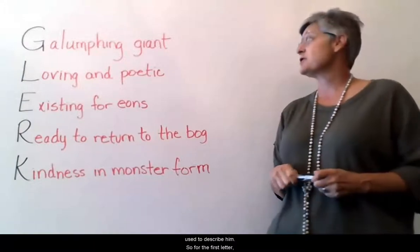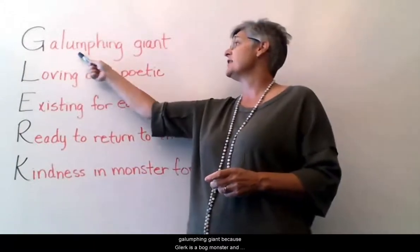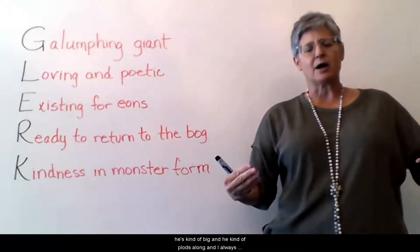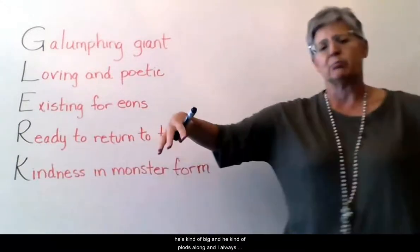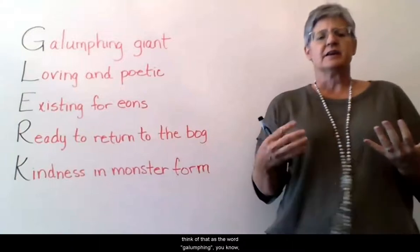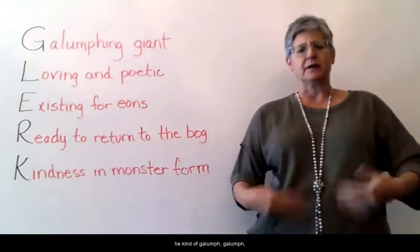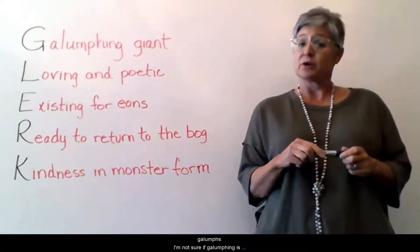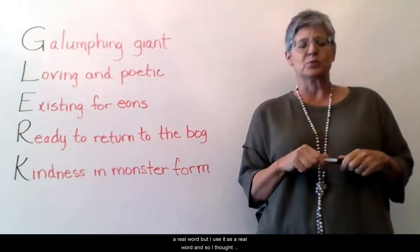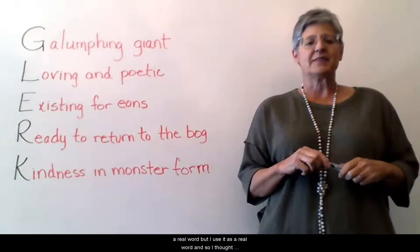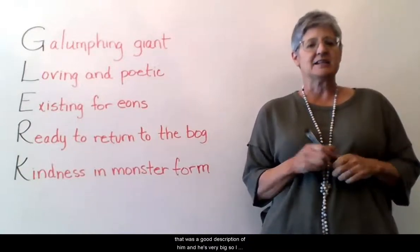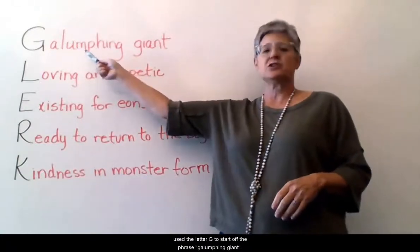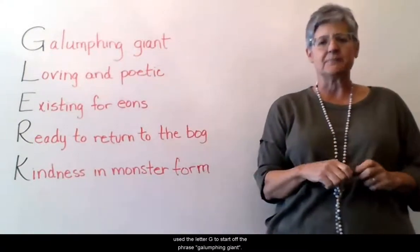For the first letter G, I have the phrase 'galumphing giant,' because Glurk is a bog monster and he's kind of big and he kind of plods along — he goes 'glump, glump, glump.' I'm not sure if 'galumphing' is a real word but I use it as one, and I thought that was a good description of him since he's very big. So I use the letter G to start off the phrase 'galumphing giant.'